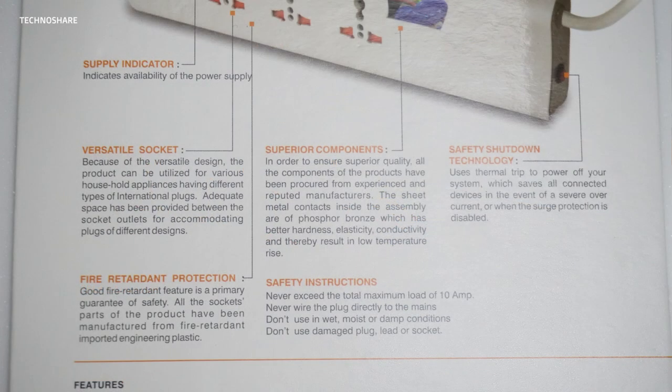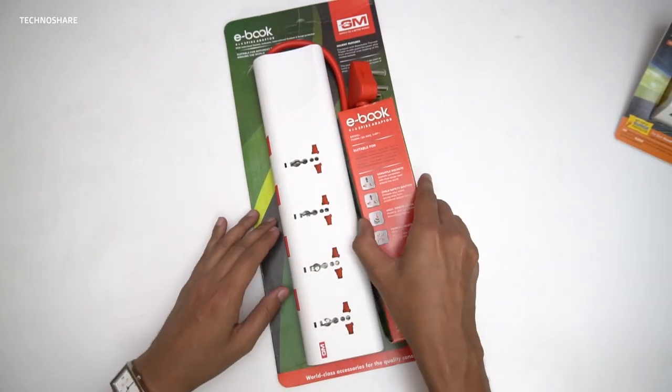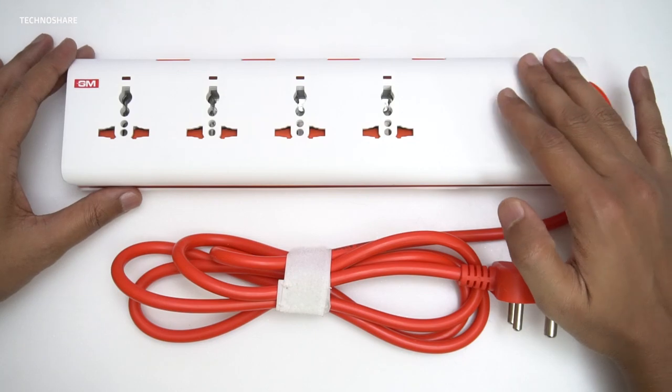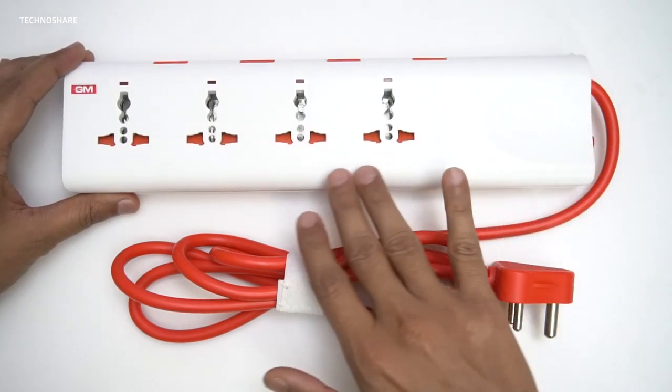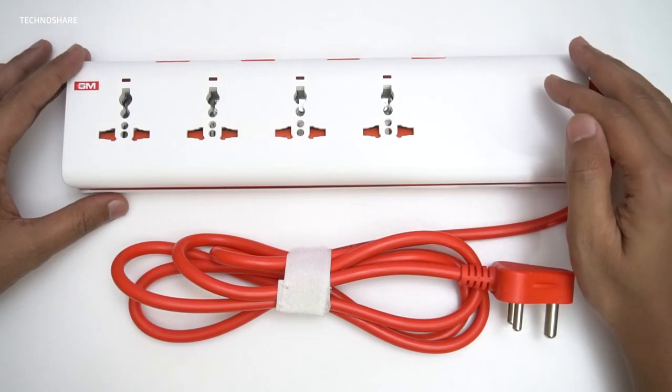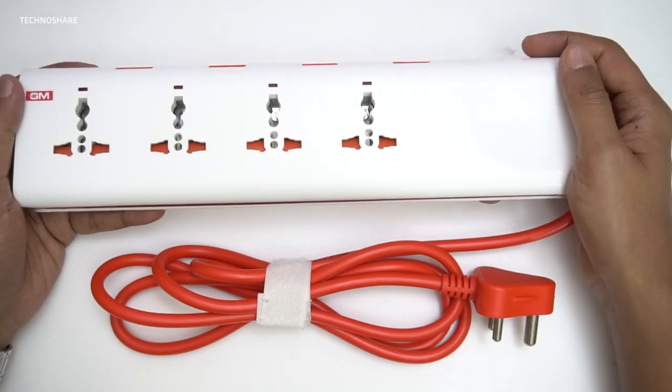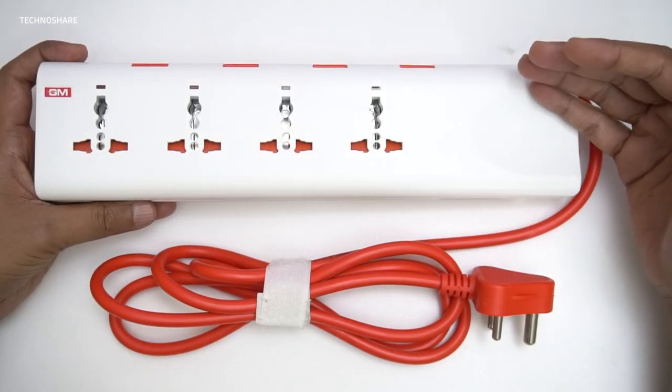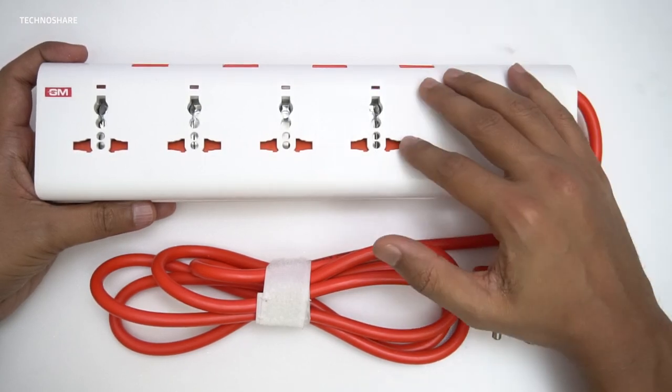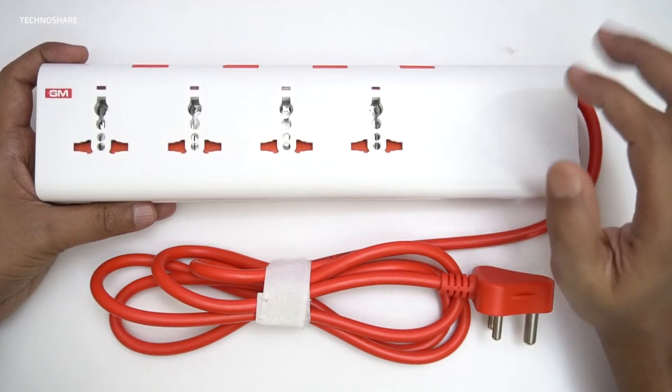Let me open this quickly and take out the spike adapter. So this is how it looks - the body is curved on the sides and the edges are also blunt, which is good. It feels strong and durable and I hope it will sustain drops and should not break. Also on the package, it's mentioned that superior quality components have been used inside, including sheet metal contacts to ensure high durability and safety.